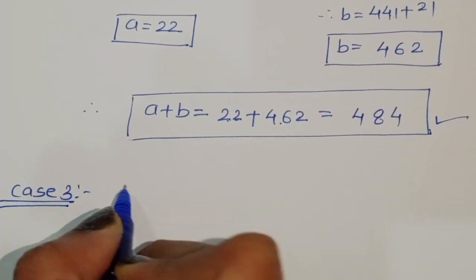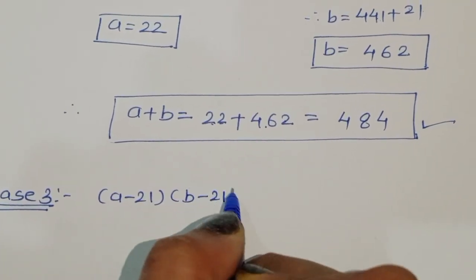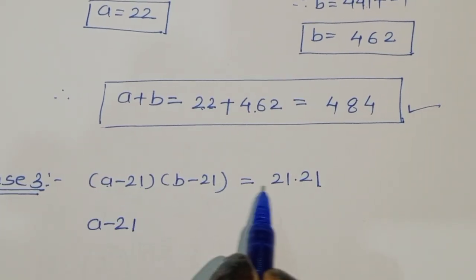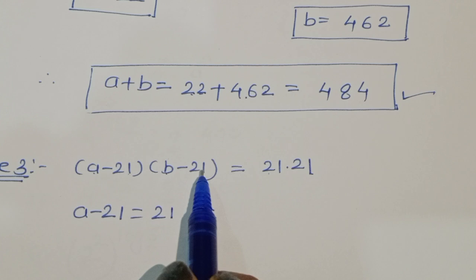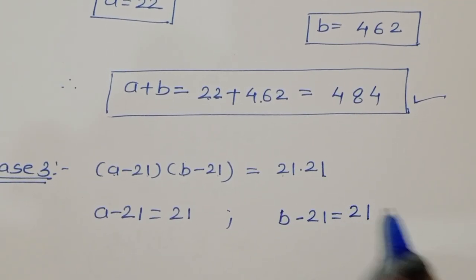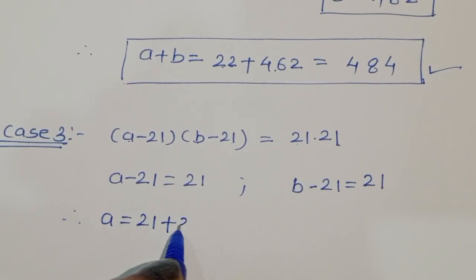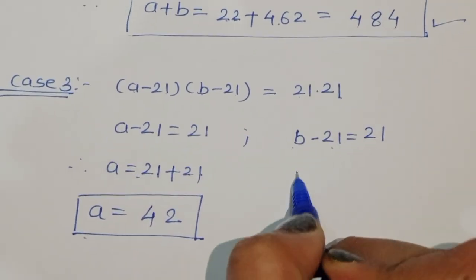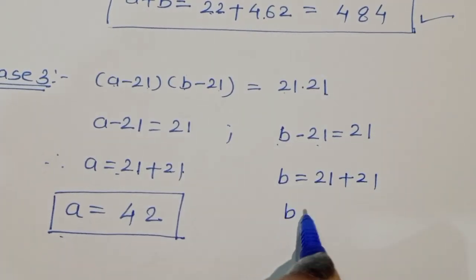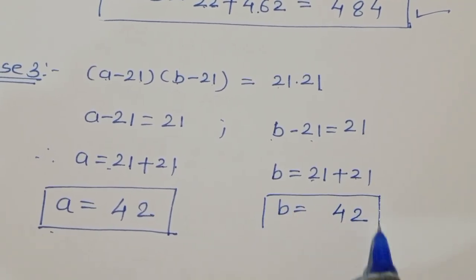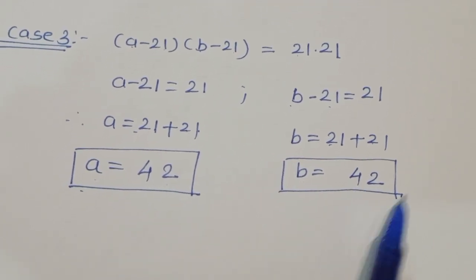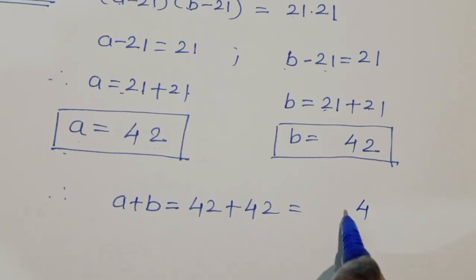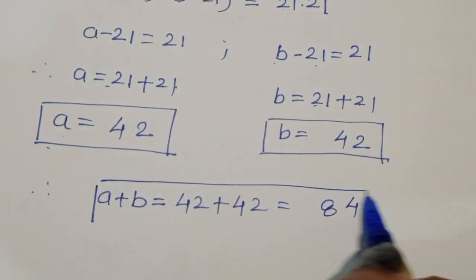Case 3: (a minus 21)(b minus 21) equals 21 times 21. Comparing LHS and RHS, a minus 21 equals 21 and b minus 21 equals 21. So a equals 21 plus 21 equals 42, and b equals 21 plus 21 equals 42. From Case 3, a plus b equals 42 plus 42 equals 84.